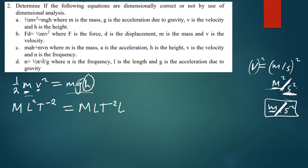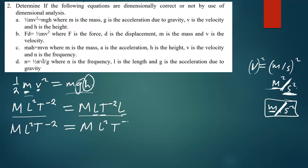Let's simplify and compare both sides. If they are equal, the equation is correct; if not, it's wrong. On the left we have ML²T⁻², and on the right we have M times L times L, giving ML²T⁻². Both sides match, so the equation is correct.